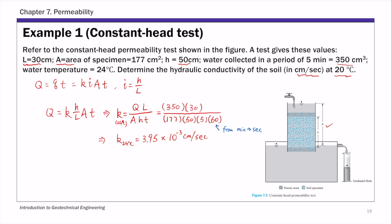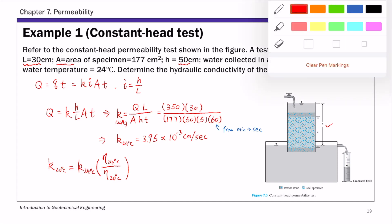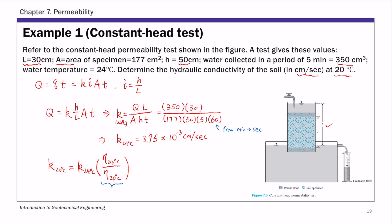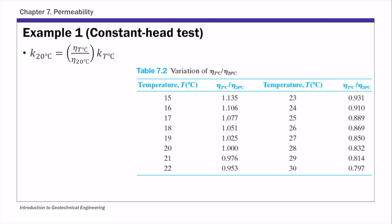Once we have the hydraulic conductivity at 24 degrees C, we can calculate K at 20 degrees C. This equals K at 24 degrees C times the ratio of the viscosity of water at 24°C over the viscosity at 20°C — that's eta 24 over eta 20. This ratio comes from Table 7.2, which gives the variation of eta T over eta 20 for various temperatures.